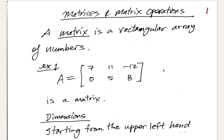A matrix is just a rectangular array of numbers. In fact, in computer science, they often call these arrays instead of matrices. The singular is matrix — like the movie — and the plural is matrices.